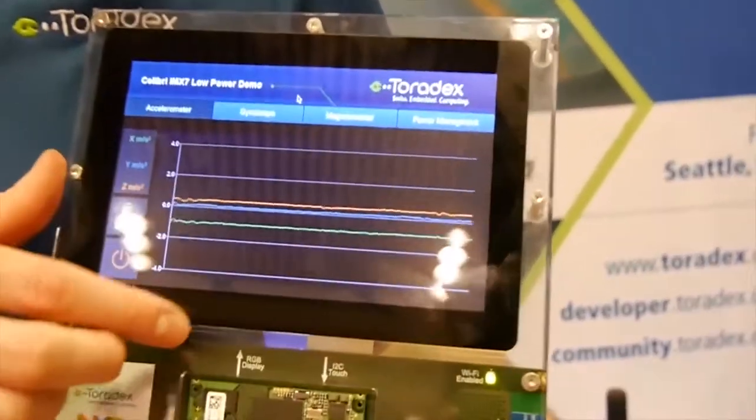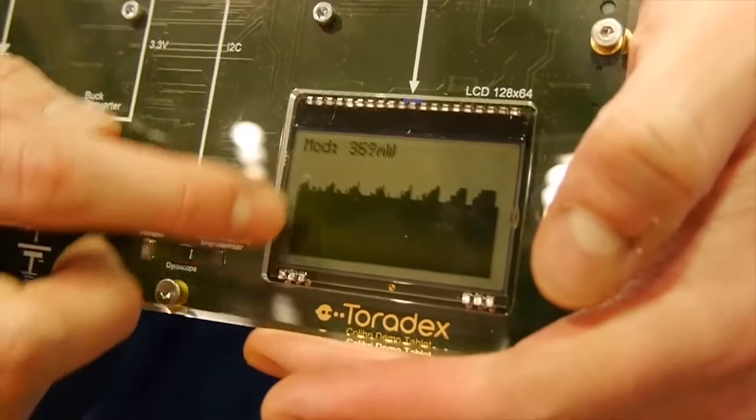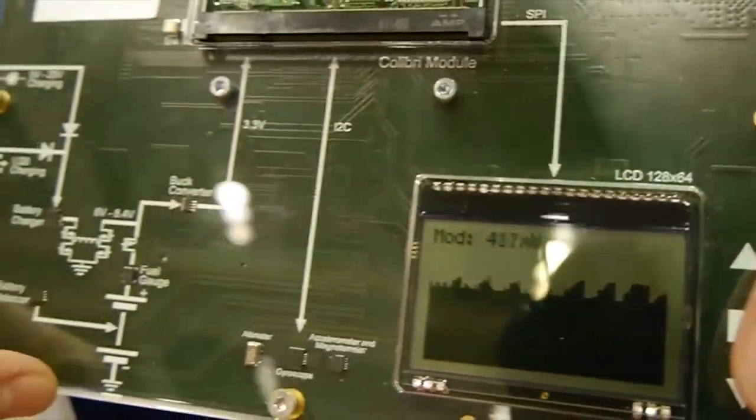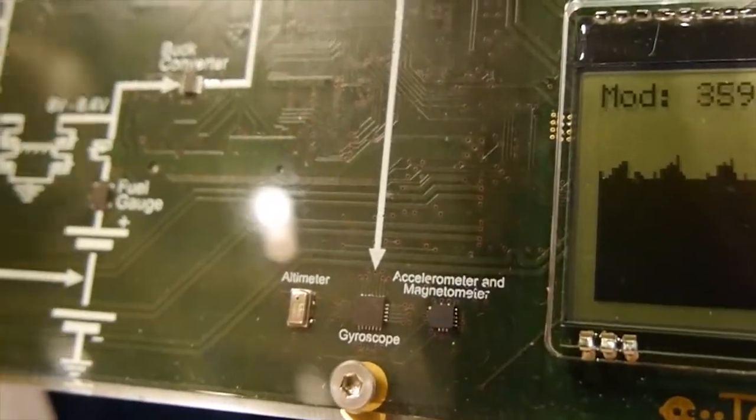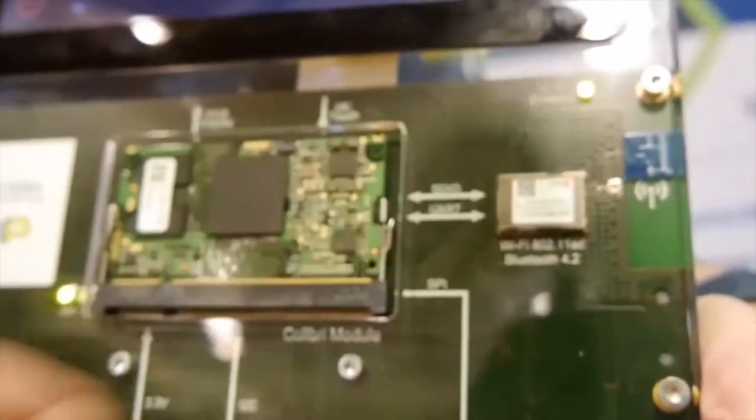Here we see the A7 driving this display and the M4 driving the small display down here showing the power consumption. We also have some sensors like accelerometer, gyroscope, and magnetometer on here. Also Wi-Fi, Bluetooth, and a nice charging circuit.